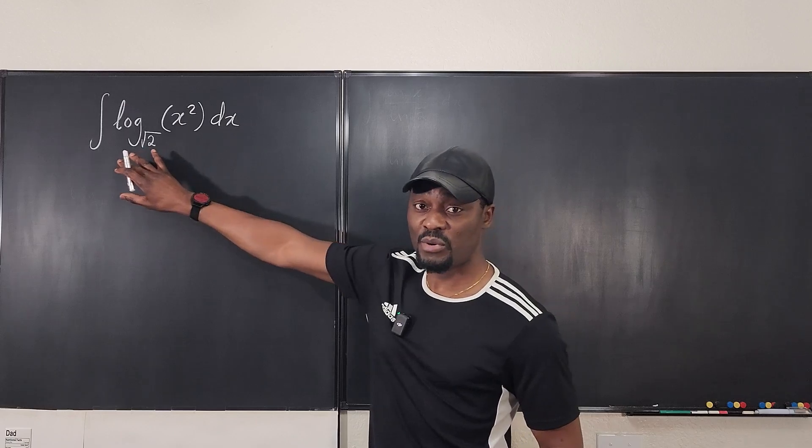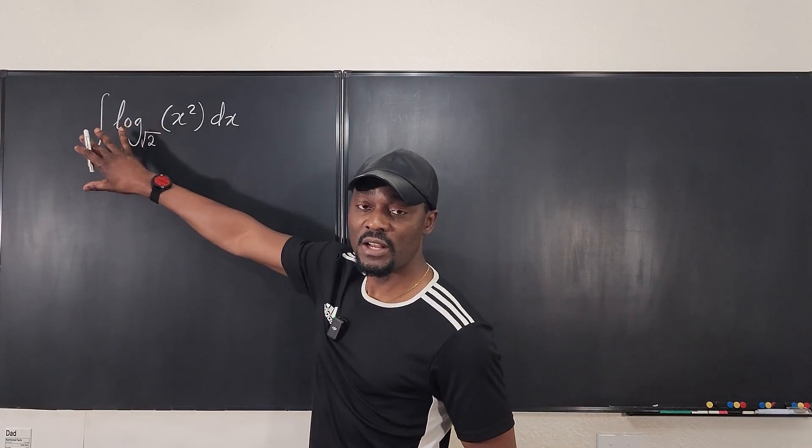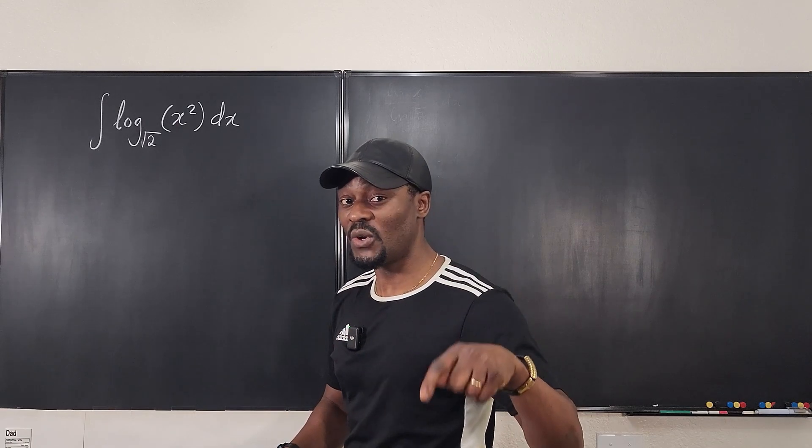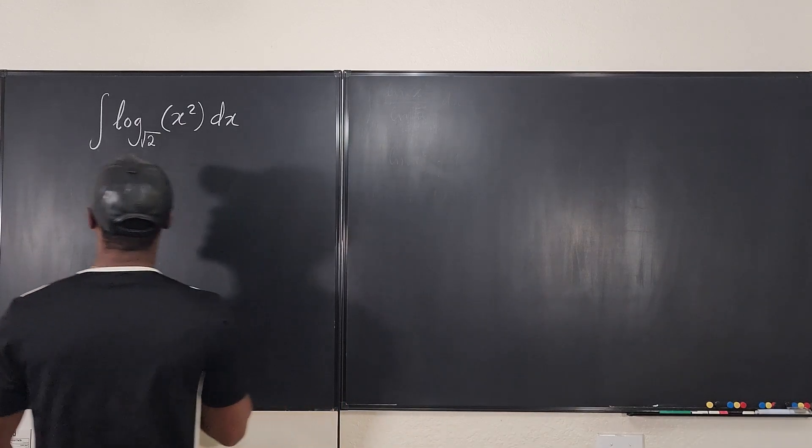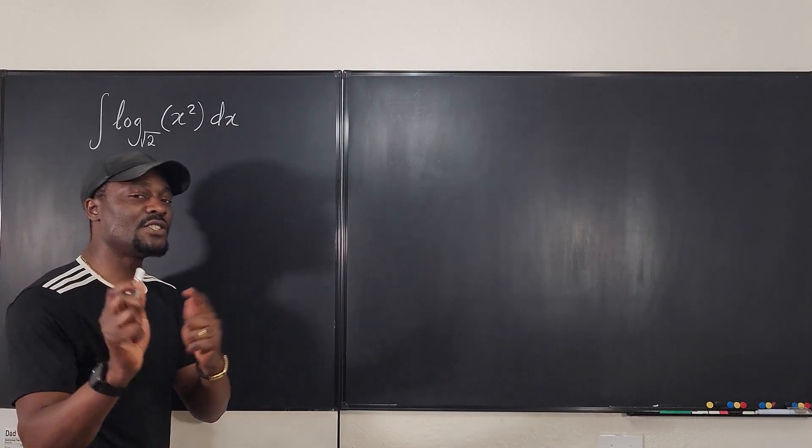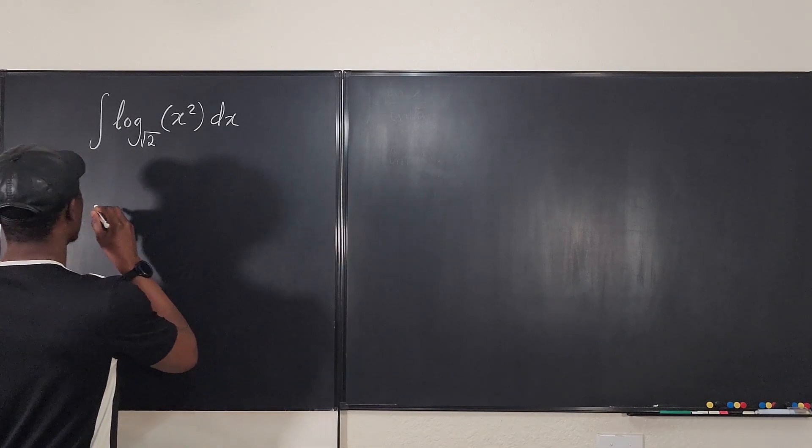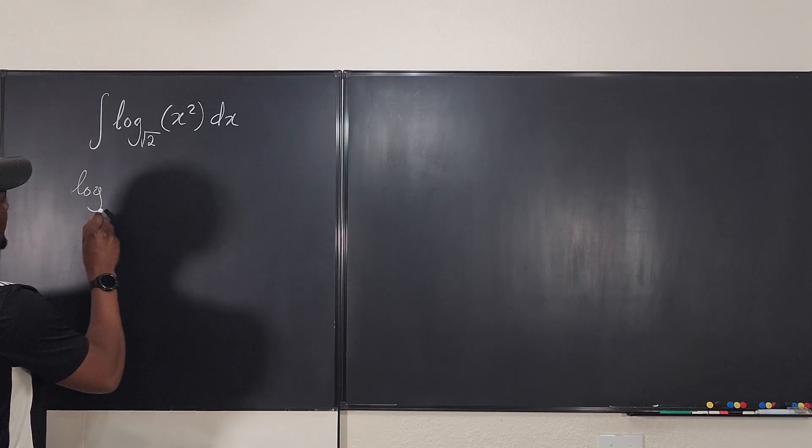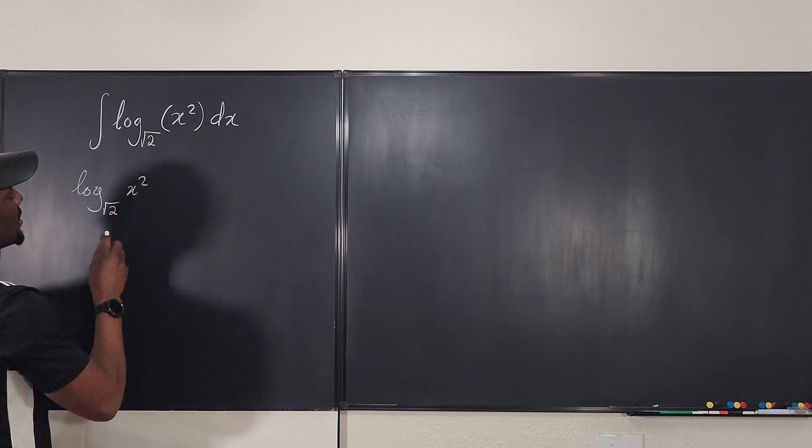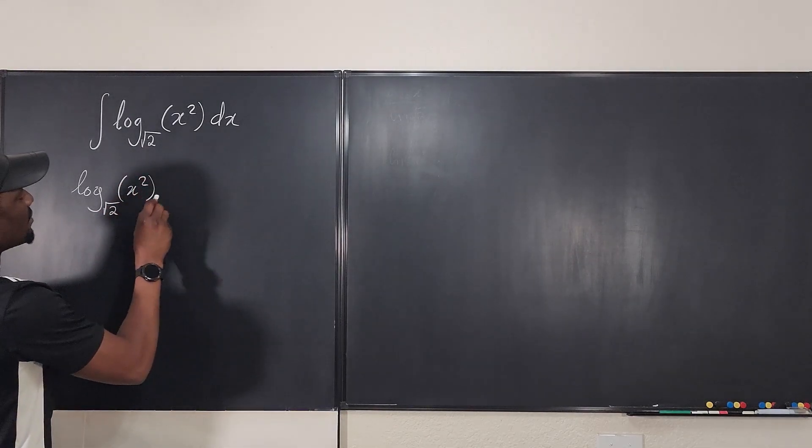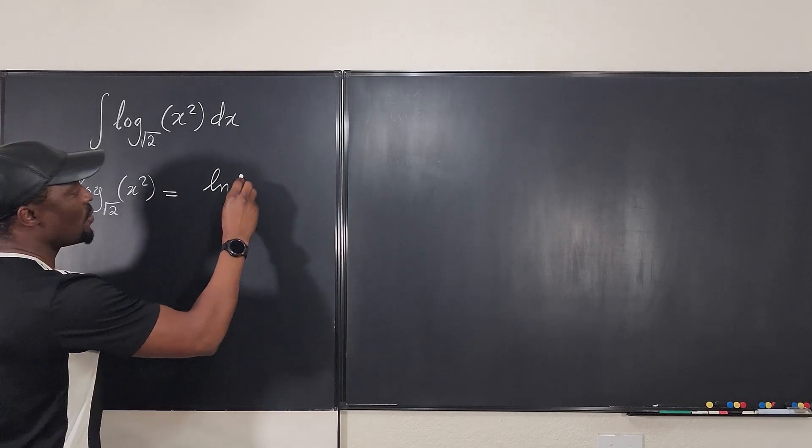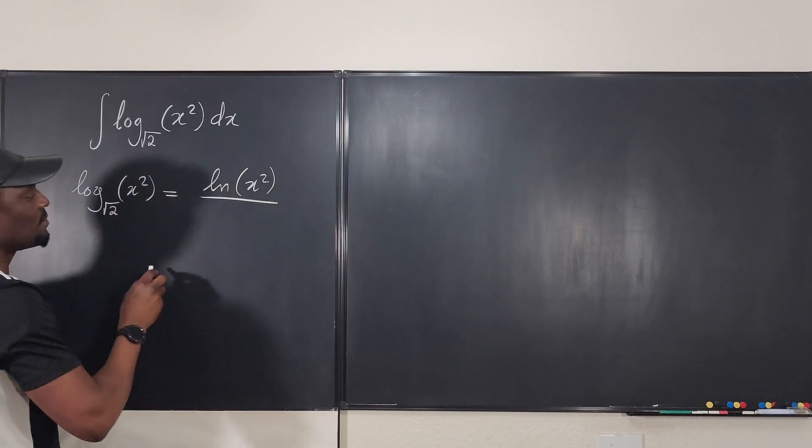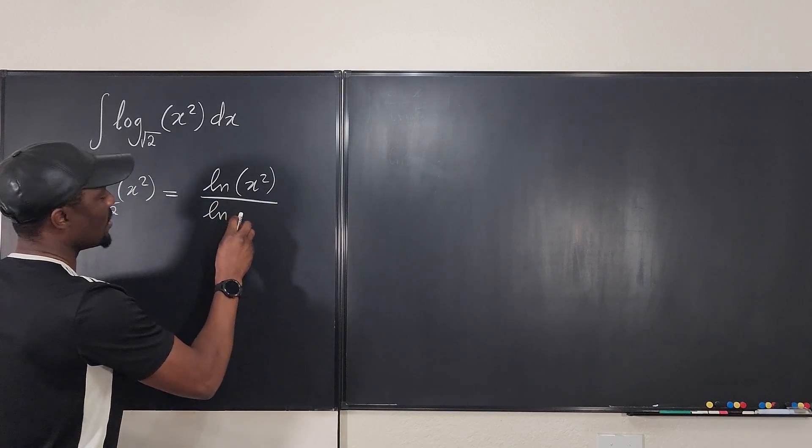The first thing you're going to do is rewrite the problem because we cannot integrate logarithms in other bases. We can only integrate when it's written in the natural log form. So using the change of basis formula, we can say that the logarithm of base 2 of x squared, we can write it in the form we like, which is the natural log of x squared over the natural log of the base.